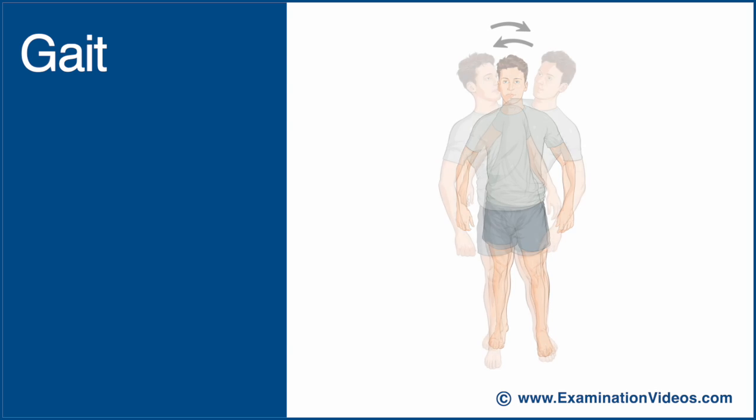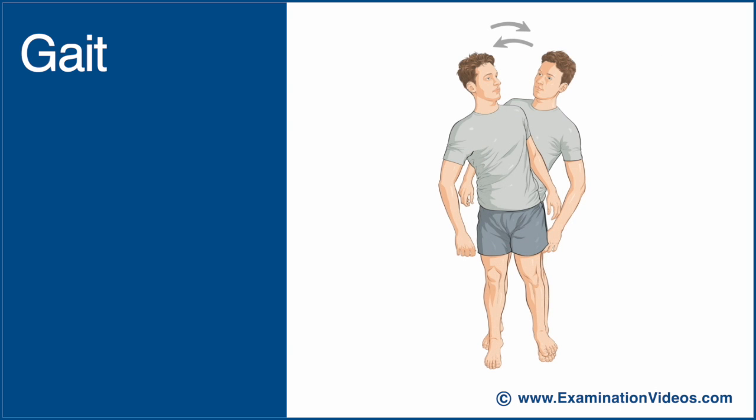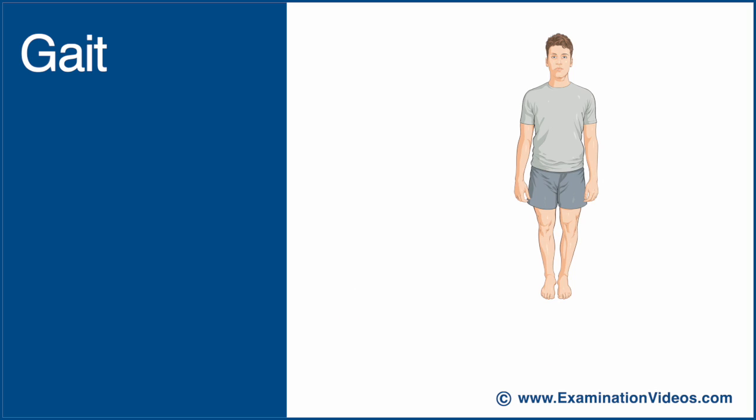A wide-based, unsteady, and staggering gait is called ataxia and is typical of cerebellar disorder. To further challenge the patient's gait and balance,